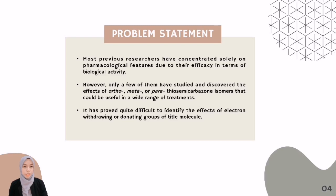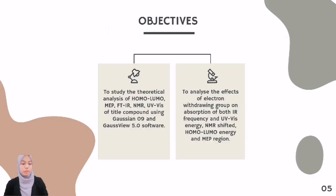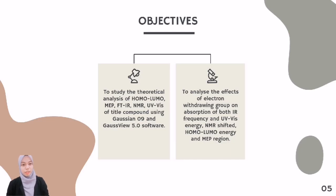It has proved quite difficult to identify the effects of electron-withdrawing groups on the titan molecule. Therefore, computational analysis software such as Gaussian09 and GaussView 5.0.9 is essential to solve this problem. The objective of this research is to study the theoretical analysis of HOMO-LUMO, MEP, FT-IR, NMR, and UV-Vis by using Gaussian09 and GaussView 5.0.9 software, and to analyze the effects of electron-withdrawing groups on IR frequency, UV-Vis energy, NMR shift, HOMO-LUMO energy, and MEP regions.